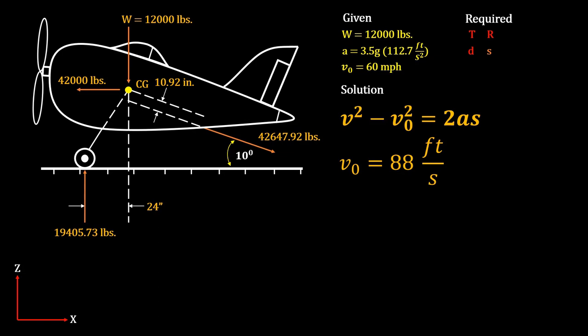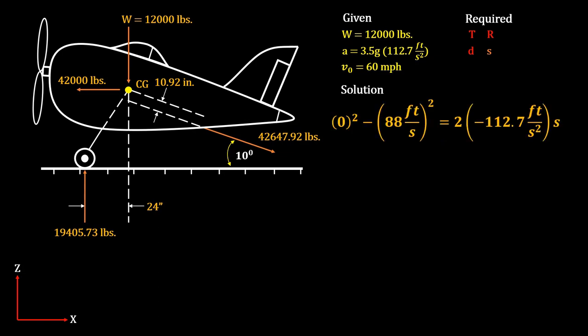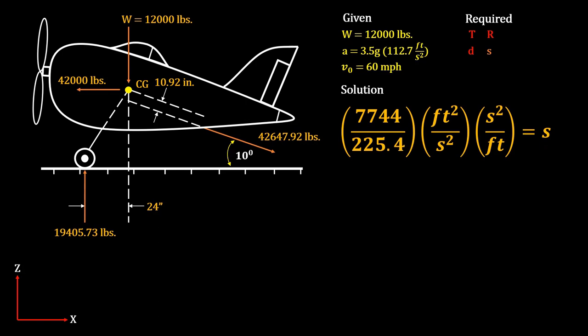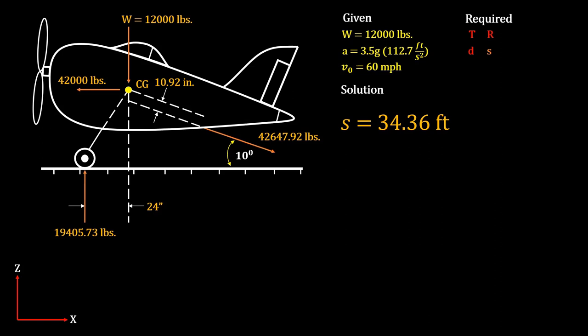With all values known, let's plug them into the formula. We cancel the first term since final velocity is zero. Since the airplane is decelerating, the acceleration is negative. Dividing both sides by negative 225.4 feet per second squared to isolate s, and canceling units, we are left with simply feet. Our stopping distance equals 34.36 feet, solving our fourth requirement.